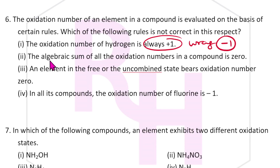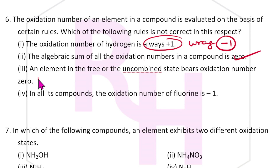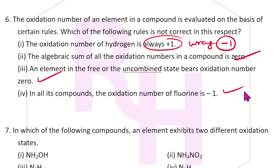The rule that the algebraic sum of all oxidation states equals the charge is correct. An element in the free or uncombined state has oxidation state 0 — also correct. In all compounds, the oxidation number of fluorine is −1 — also correct. So the answer for this question is A.